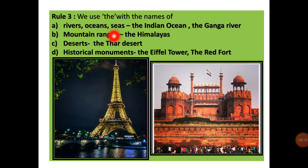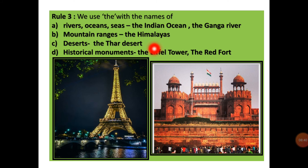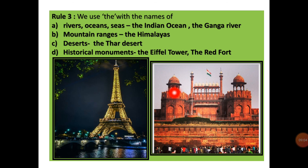Now the next rule: we use the with the names of rivers, oceans, and seas, because they are one in number — the Indian Ocean, the Ganga River. The Ganga River is only one in India; the Indian Ocean is also one in the world. Also, mountain ranges — the Himalayas; deserts — the Thar Desert; historical monuments — the Eiffel Tower, the Red Fort. Because here we are talking about specific things, the will come before the word.